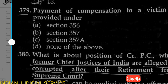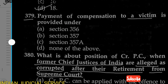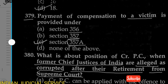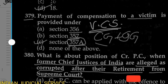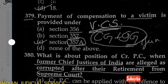Question 379: The payment of compensation to a victim is provided under which section? Option A: Section 356. Option B: Section 357. Option C: Section 357A. Option D: None of the above. The answer is Option C, Section 357A, which deals with the Victim Compensation Scheme. This scheme is formulated by the central government plus state government, who together form a fund for victims.